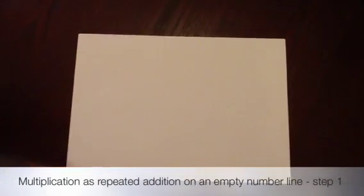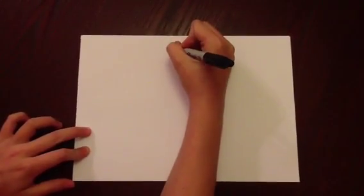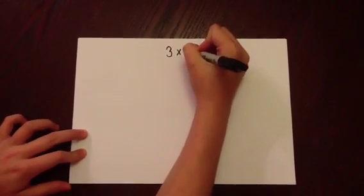Multiplication as repeated addition on an empty number line. Step 1. In this first formal written method, we begin by writing the sum clearly.